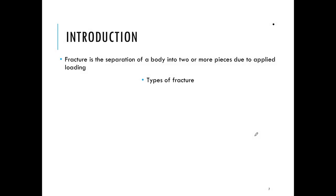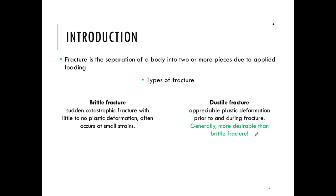Different materials actually undergo different types of fracture. Broadly speaking, we have two types: brittle fracture and ductile fracture. In brittle fracture, the material has a stress-strain curve and then it just fractures — this leads to a sudden catastrophic fracture which occurs without any warning. The material tends to remain within the linear elastic regime with almost no plastic deformation occurring before failure, and this also occurs at relatively small strains.